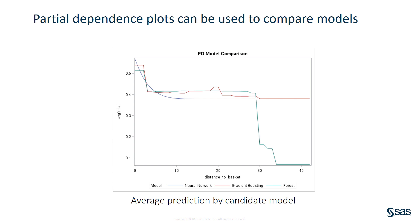You can also use partial dependence plots to evaluate and compare candidate models. The plot shown here overlays partial dependence functions for three candidate models: a neural network, a gradient boosting model, and a forest model. For the neural network, the predicted effect of distance to basket on shot success is non-linear and asymptotic, whereas for the other two models the effect is more step-like. Only one model candidate, the forest, predicts a steep drop-off in success for shots taken from around 28 feet or more. That seems intuitive because long-distance shots are typically taken out of desperation or at the last moment. Overlaying partial dependence functions in this manner can help you choose models that are not only accurate but also make intuitive sense.